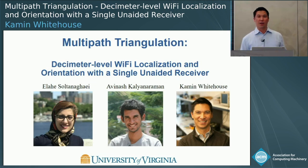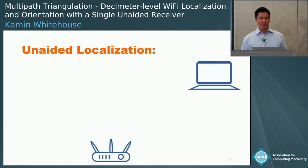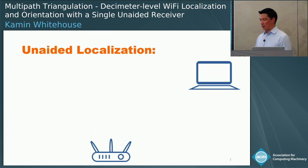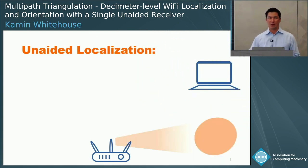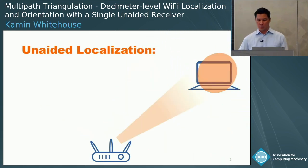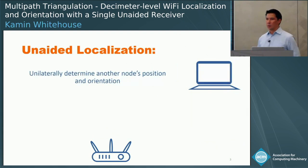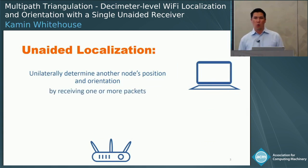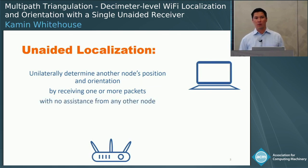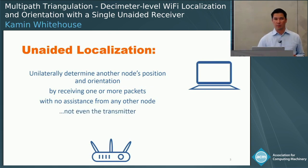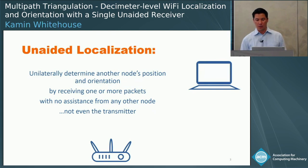The problem we are trying to solve with this work is called unaided localization, which basically means being able to locate a device just by receiving packets from it. In other words, the ability to unilaterally determine another node's position and orientation by receiving one or more packets from it, with no assistance from any other node — not even the transmitter. That's what we call unaided localization.